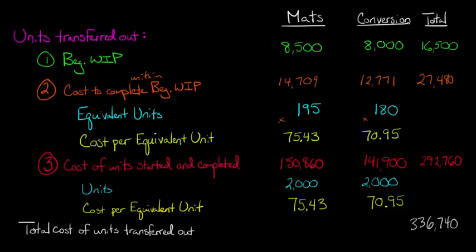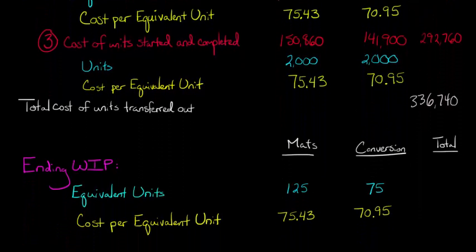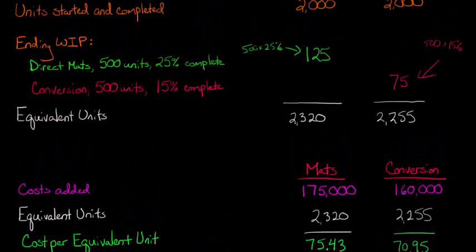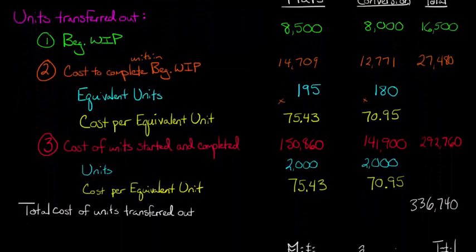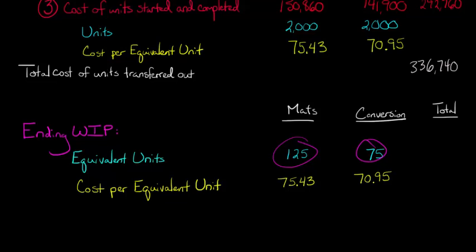Now we need the ending work in process for direct materials, conversion costs, and the total. For ending WIP, we look at the equivalent units we already calculated: 125 for direct materials and 75 for conversion costs. The ending WIP had 500 units at 25% complete, so 500 times 25% is 125 for direct materials. For conversion costs, 500 units at 15% gives us 75. We just bring these numbers down from our previous work and multiply by the corresponding cost per equivalent unit.